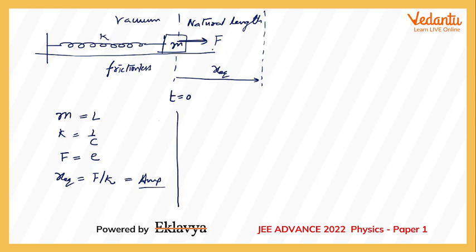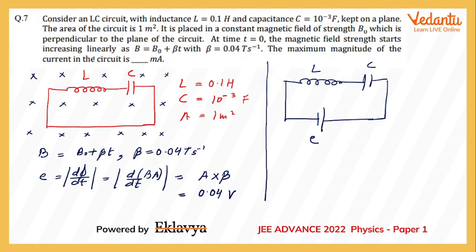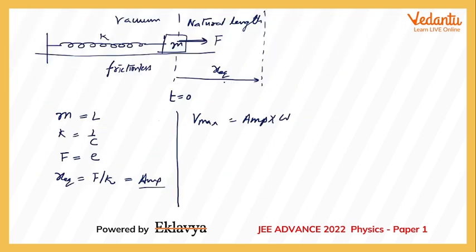And we also know that in these circumstances, if SHM is taking place, then v max is given by amplitude of oscillation into omega. Now this question wants us to find out the maximum current in the circuit, so maximum current will be analogous to maximum speed that we can find in this oscillating system. So it basically means that i max will be given by amplitude into omega.